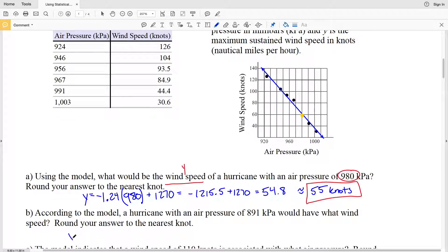We'll have Y equals negative 1.24, and this time we're going to be multiplying that by 891 as opposed to the previous problem where we multiplied by 980. Then we're going to add 1270 to that.